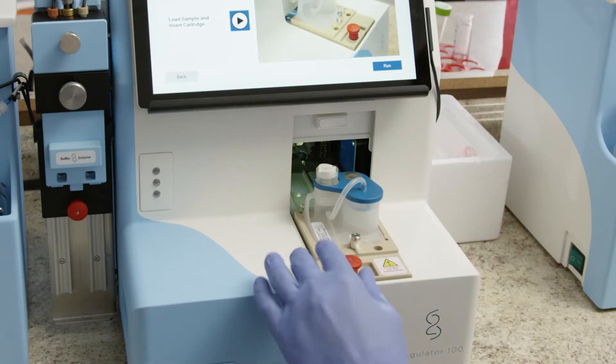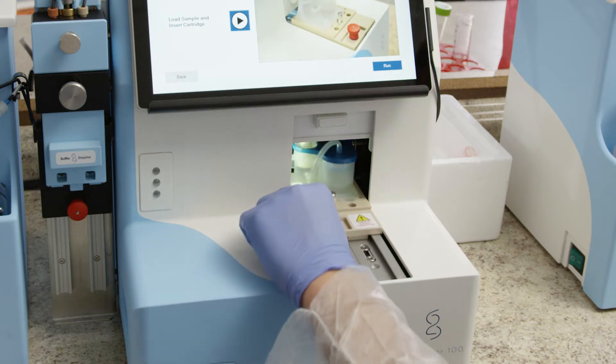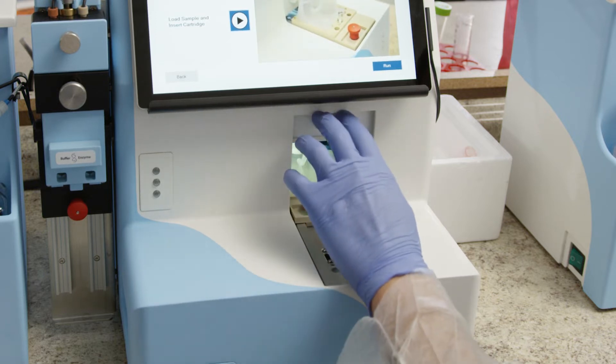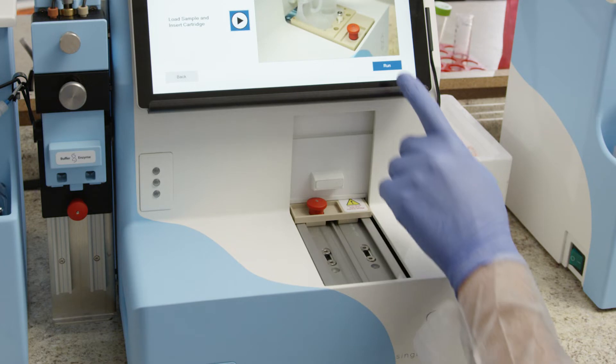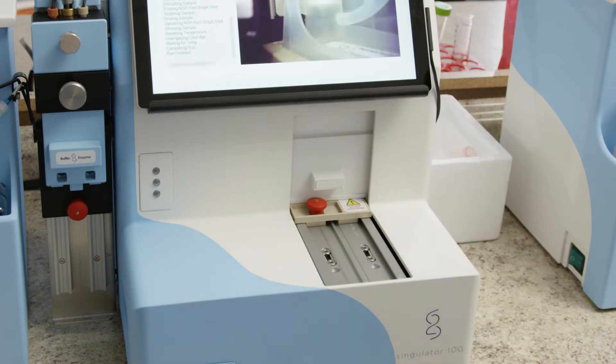Insert the cartridge into the instrument by pushing the stage from behind. It's important not to hold onto the red knob during this step. You should hear the red knob click into place when the cartridge is fully inserted. Close the door.